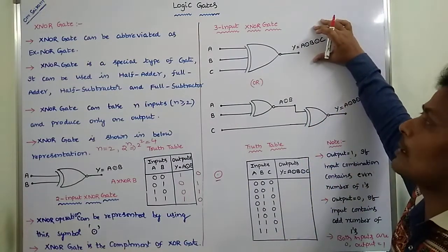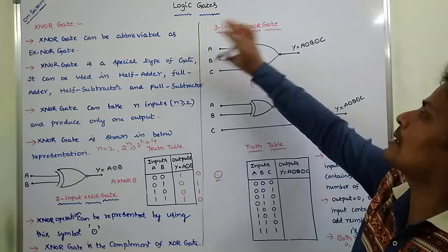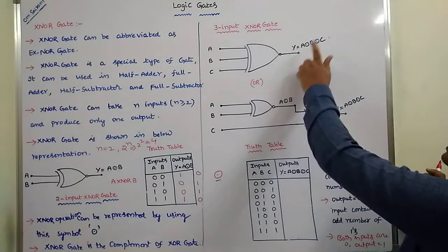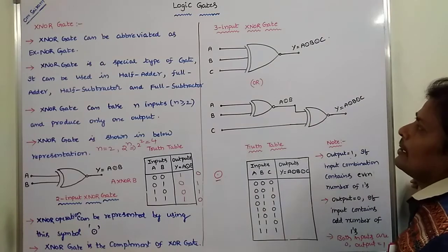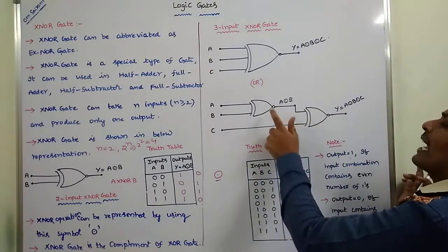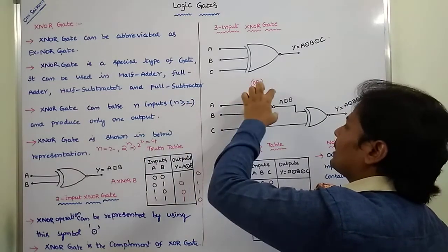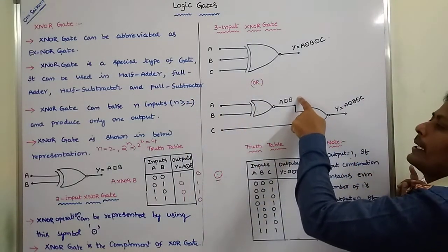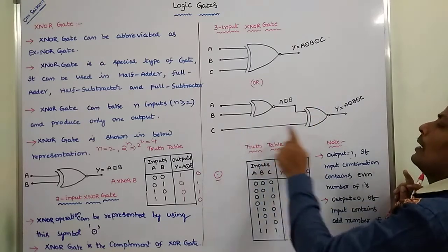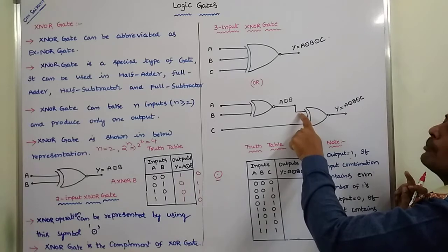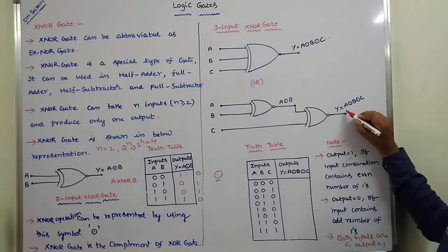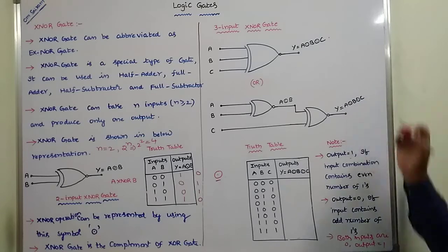This is the three-input exclusive NOR gate, where A, B, and C are three inputs applied to the gate and we get one output: Y is equal to A exclusive NOR B exclusive NOR C. This can be implemented using two exclusive NOR gates: A and B are applied to the first gate, then the output of that gate and input C are applied to the second exclusive NOR gate to produce the final output Y.